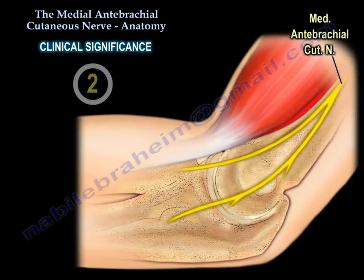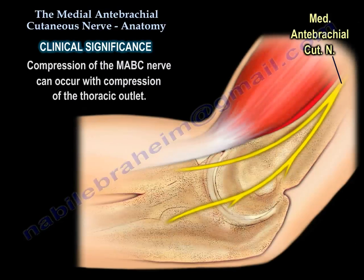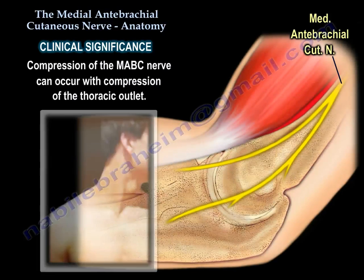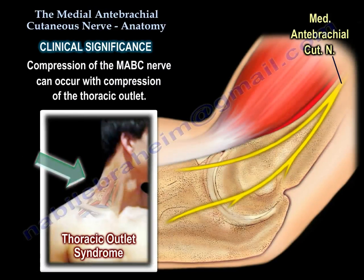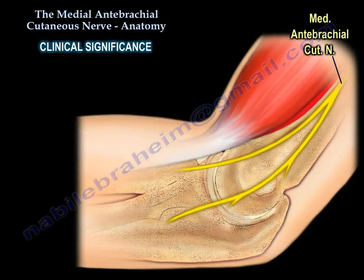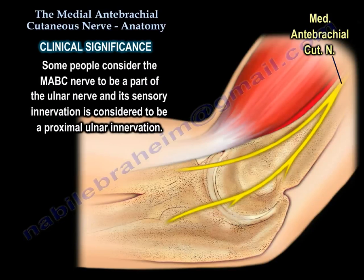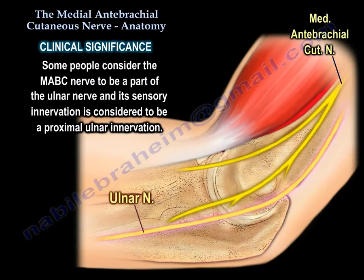Clinical Significance #2: Compression of the Medial Antibrachial Cutaneous Nerve can occur with compression of the thoracic outlet. #3: Some consider this nerve to be part of the ulnar nerve, and its innervation field is considered to be a proximal ulnar innervation.